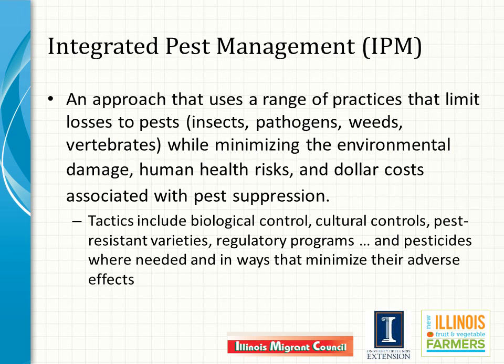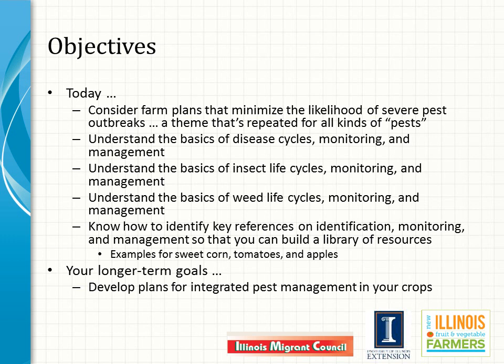Tactics include biological control, cultural controls, pest-resistant varieties, regulatory programs, and pesticides where they are needed and in ways that minimize their adverse effects. In this presentation, I want to encourage you to develop farm plans that minimize the likelihood of severe pest outbreaks, and I'll discuss that idea for various kinds of pests. I'll introduce and stress the importance of understanding life cycles, monitoring methods, and management practices for plant pathogens, insects, and weeds, and I'll provide examples of types of references you will want to gather so that you can build a library of resources. My intent is to help you work on a longer-term goal: the development and implementation of an overall integrated pest management plan for your farm.